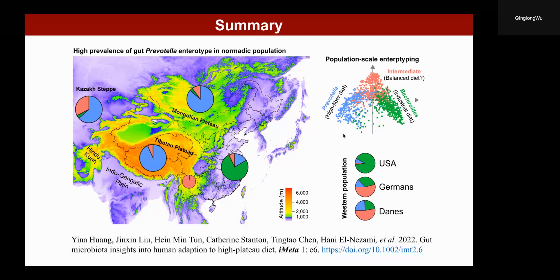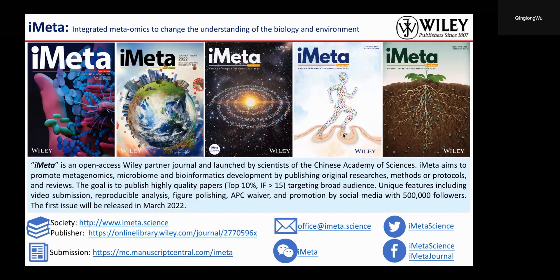We think that host gut microbiota and diet interactions can help us understand human adaptation to high altitude environments, as this represents a very significant environmental challenge for human survival in such harsh conditions. Our results are published in iMeta journal as a correspondence, and we hope to have more discussions on this topic in the future. Thank you so much.